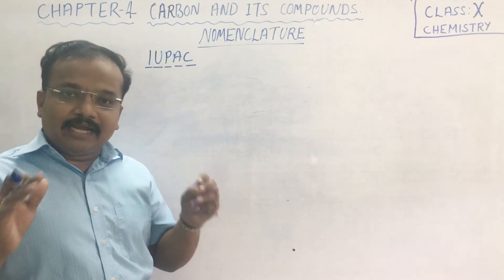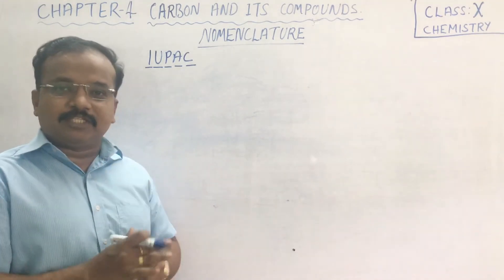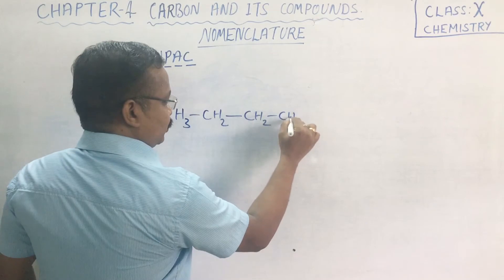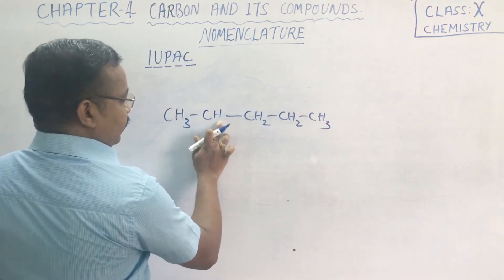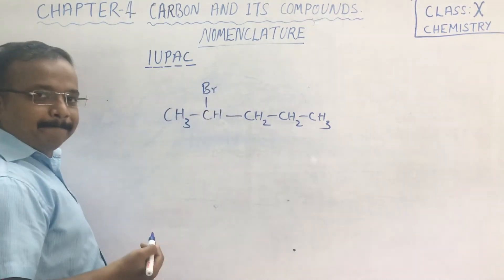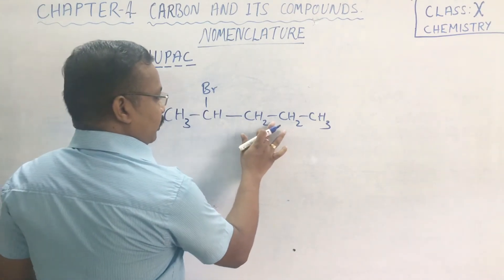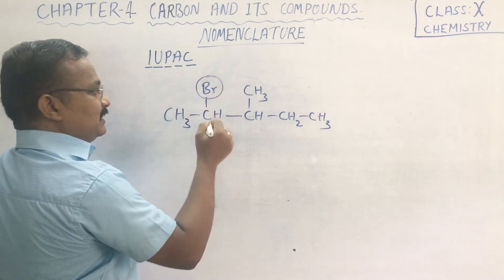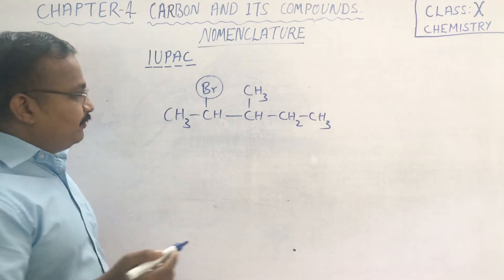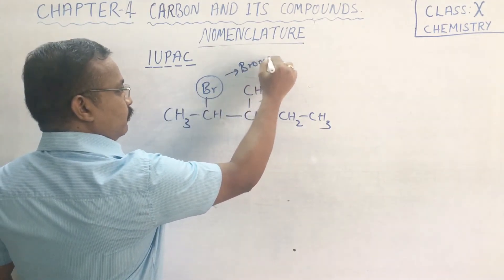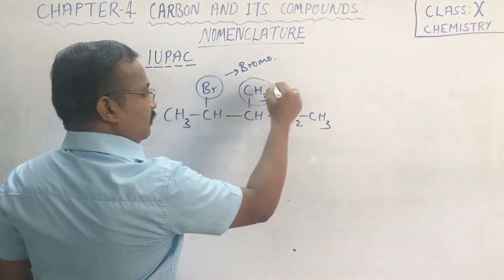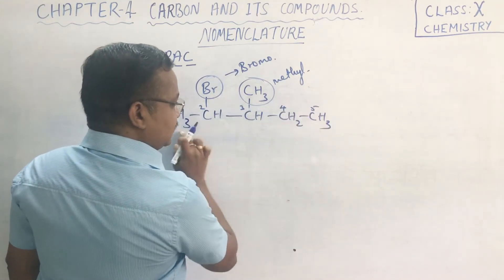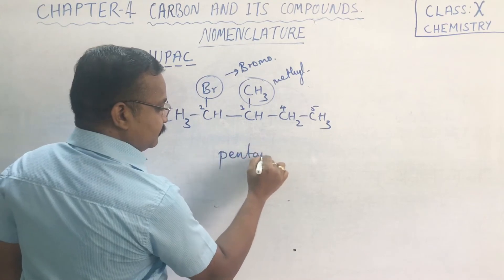Next we shall study about species other than hydrocarbon substituents like methyl or ethyl groups. Consider CH3-CH2-CH2-CH2-CH2-CH3, which is normal pentane. Suppose at one position bromine is present, and at another position there is also a CH3 group. Bromine is a halogen derivative — a halo derivative — so it will be named as 'bromo'. The parent chain is 1, 2, 3, 4, 5 — pentane.